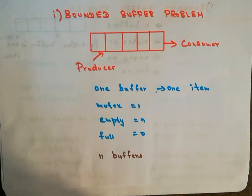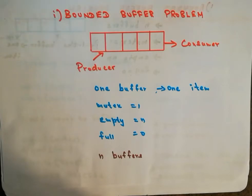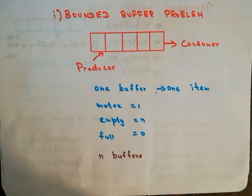In this video we will see about the bounded buffer problem. The bounded buffer problem is also called the producer-consumer problem and it is a classic problem of synchronization. All three are standard examples of classic synchronization problems and they serve as examples for a large class of concurrency control problems which usually happen in operating systems.